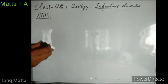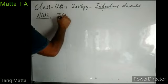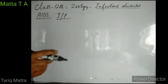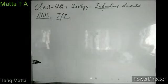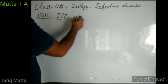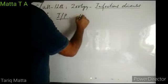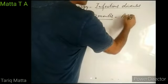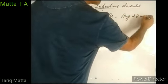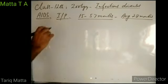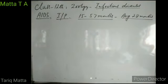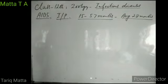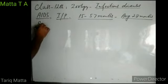Today we will discuss the incubation period for AIDS. The incubation period is the time from the entry of the pathogen into the body until the manifestation of the first symptoms. The incubation period for AIDS is 15 to 57 months, with an average incubation period of 28 months. It takes a considerable amount of time for the first symptoms to develop.